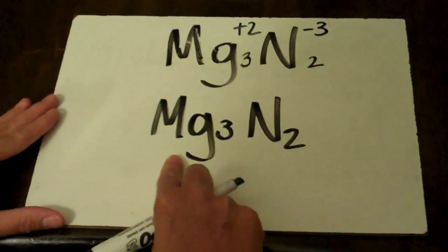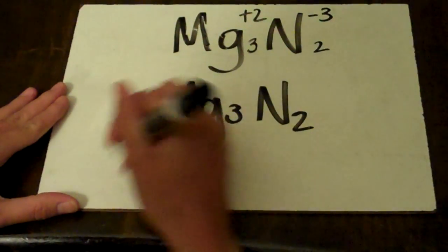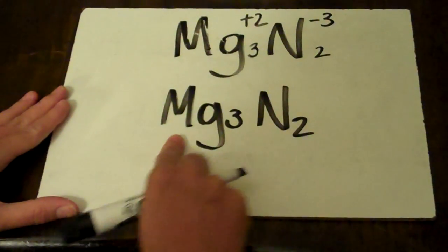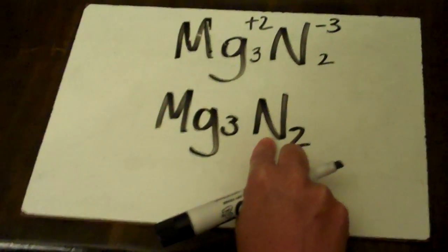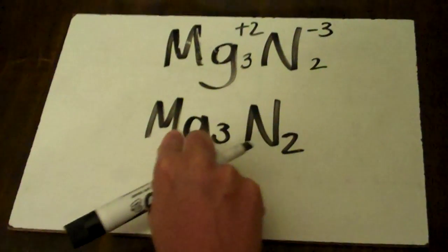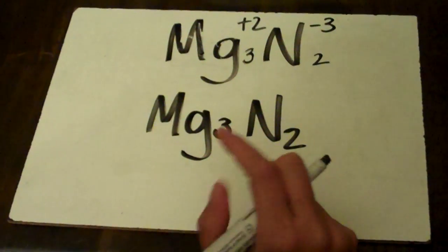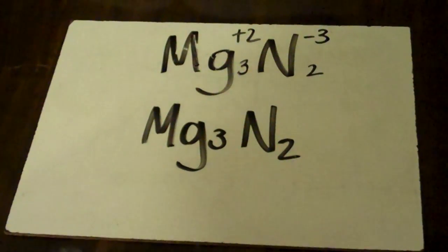And that would be called magnesium nitride. This is the full element magnesium and then just like you did with the covalence, you take the nitrogen and instead of it being magnesium nitrogen, it's magnesium nitride. You add the IDE. Alright, let's do another one.